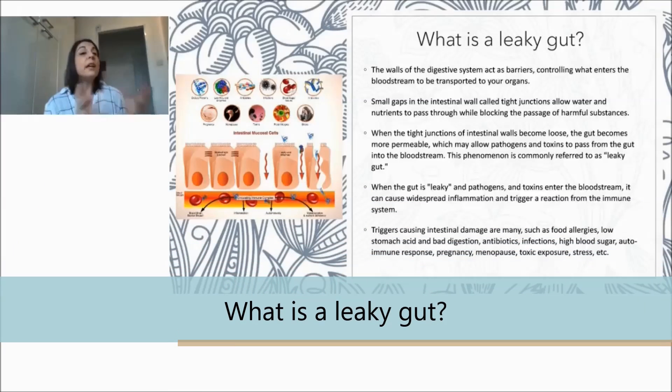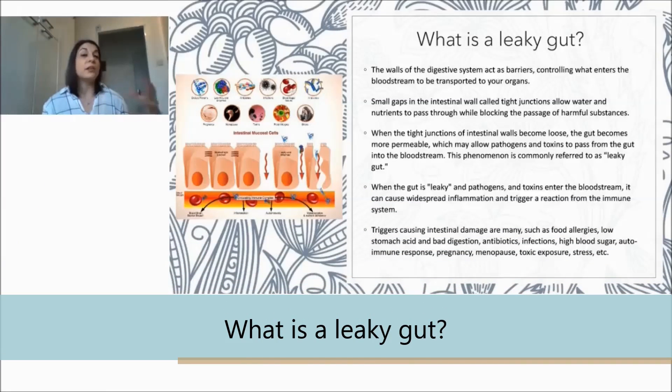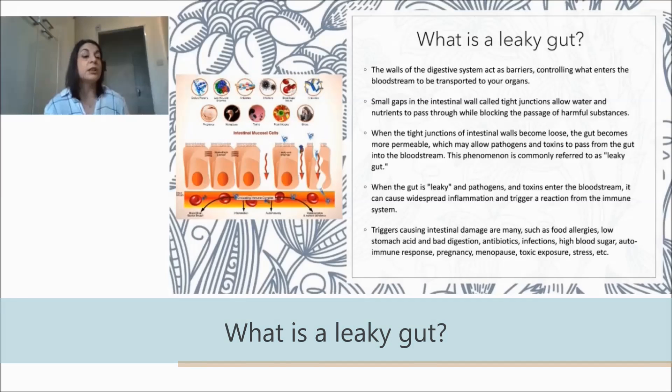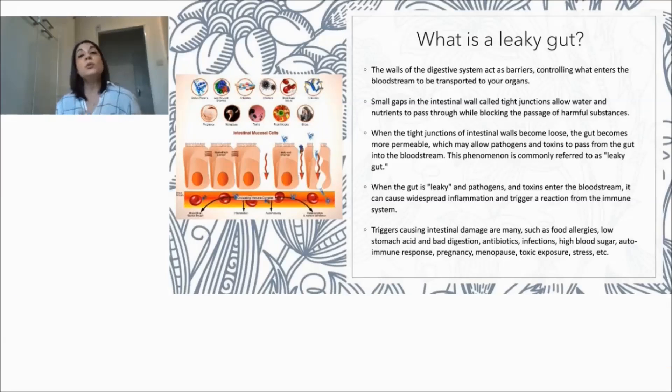So when we get a dysbiosis and when we get a parasite infection, what happens to our gut is an inflammation response. Often that generates a reduction of the production of mucus. That's the reason why this parasite and this bacteria can reach the gut wall.